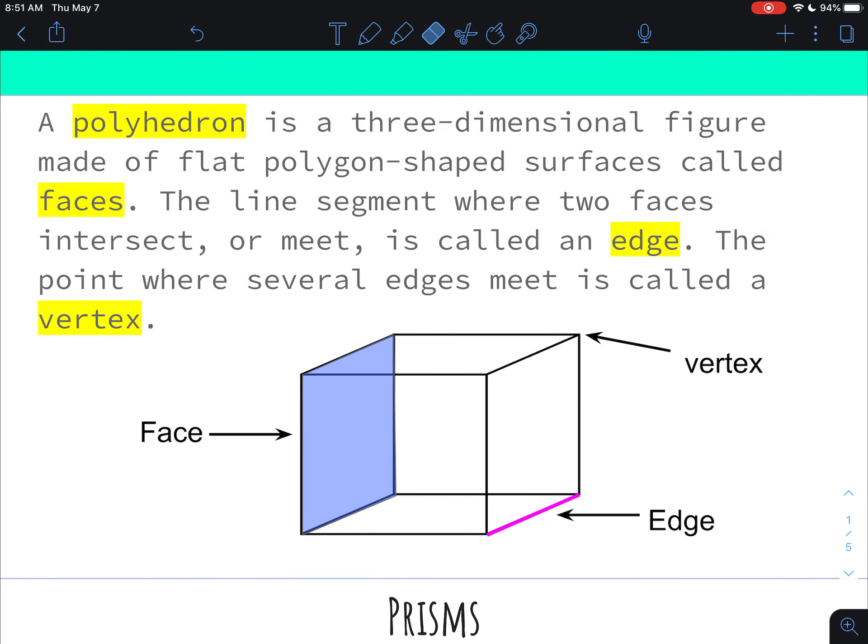So just to give you some vocabulary, a polyhedron is a three-dimensional figure. So that is what you made, all of those polyhedrons that you hopefully made yesterday: the cube, the rectangular prism, the triangular prism. Those are all three-dimensional polyhedrons.